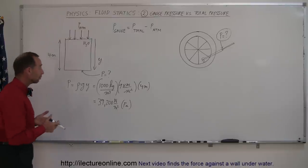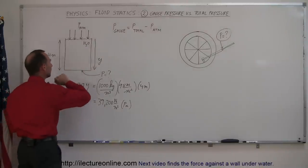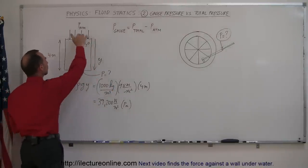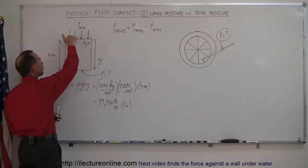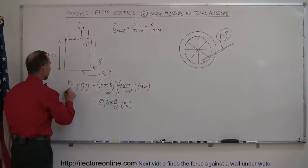But what did we find? Did we find gauge pressure? Did we find total pressure? What is it? Well, we only accounted for the pressure caused by the weight of the water. We did not account for the additional pressure caused by the atmosphere pushing down on the water. So in essence, what we found here was the gauge pressure.